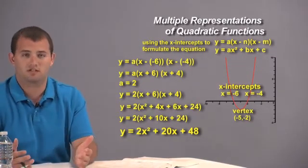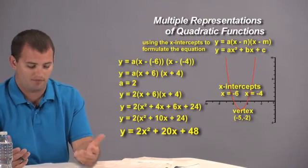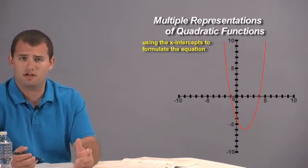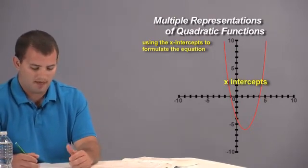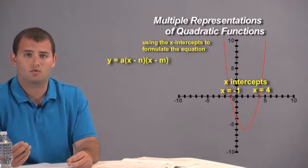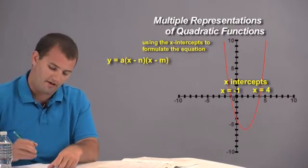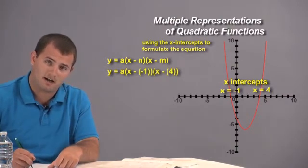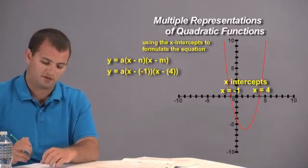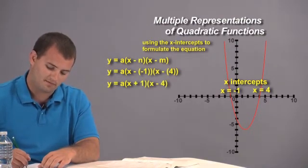That wasn't hard. We used the x-intercepts, plugged them into the equation, found a known point, used it to solve for a, and then simplified. Let's work another example. For this graph, the x-intercepts are at x equals negative 1 and x equals 4. Plugging into our equation gives y equals a times (x minus negative 1) times (x minus 4), which simplifies to y equals a times (x plus 1) times (x minus 4).